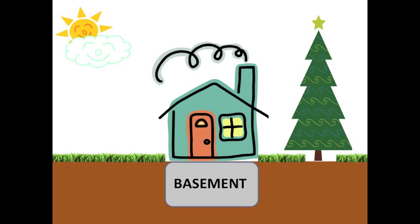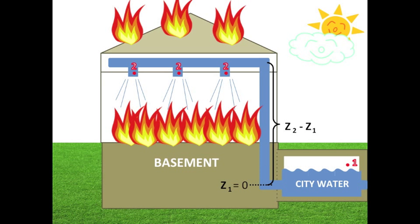Say there's a house with a basement. In this house, there's a sprinkler system and the water source is in the basement. Let's find out how this sprinkler works.